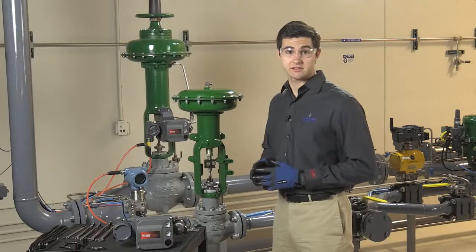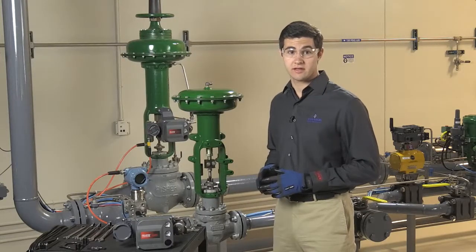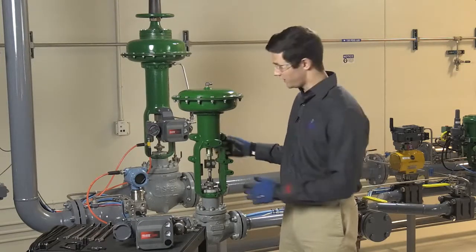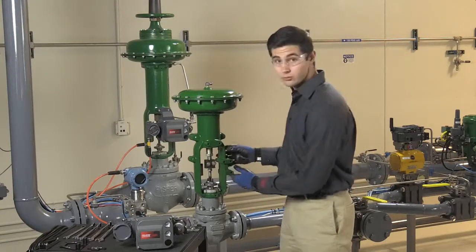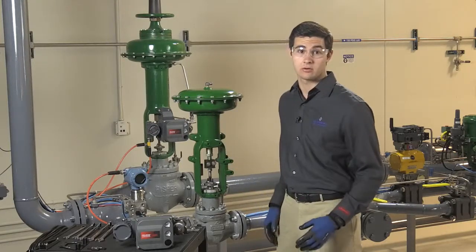When mounting a DVC 6200, make sure that the actuator is facing the correct direction with the integrated mounting pad on the right side of the actuator yoke while you're looking at it.